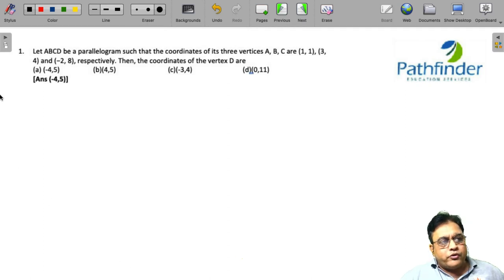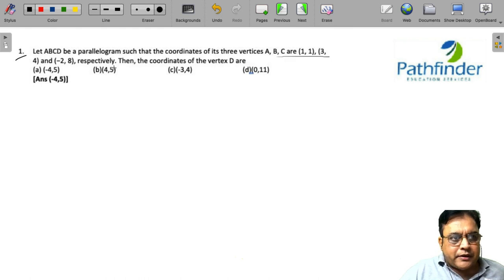CAT 2022 slot 1, quantitative aptitude question number 1. Let ABCD be a parallelogram such that the coordinates of its three vertices A, B, C are (1,1), (3,4), and (-2,8) respectively. Then the coordinates of vertex D are...